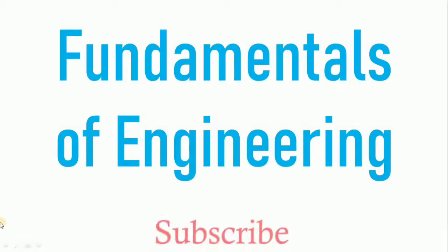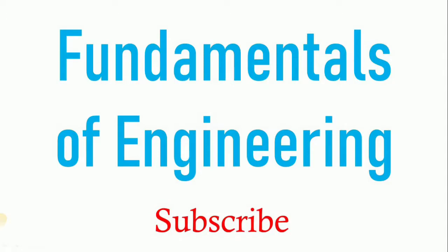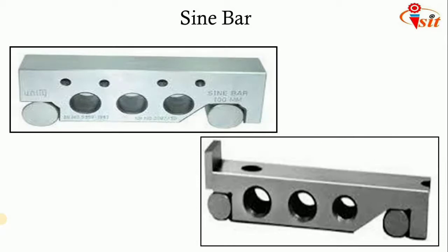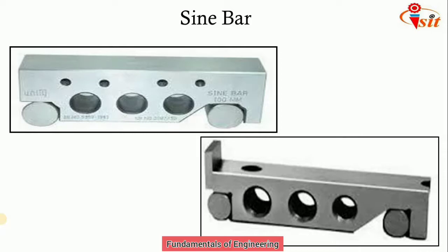Welcome to the channel Fundamentals of Engineering. In today's session we are going to see another angle measuring instrument — the sine bar. For measuring the angle, no absolute standard is required; the measurement is done in degrees, minutes, and seconds. The measurement of angular and circular divisions is an important part of inspection, concerned with individual angles, angular changes, and deflections on components, gauges, and tools.